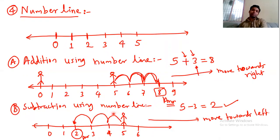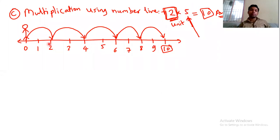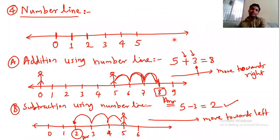Similarly for subtraction, you have to jump towards the left. And when you multiply, you have to see — this two numbers is the multiplication. So here we have two units of jump, and how many jumps? 5 jumps. So direct to the first jump — two units of jump. This one unit means 0, 1, 2. That is one unit. So that is how we solve the multiplication.